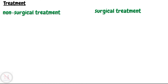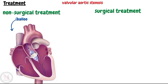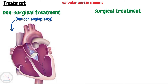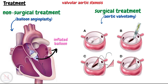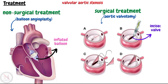There are both surgical and non-surgical treatment options available. In valvular aortic stenosis, the non-surgical treatment is balloon angioplasty performed in the cardiac catheterization lab. With the help of cardiac catheterization, a balloon is inflated at the site of stricture or narrowing, which opens up the aorta and improves blood flow. The surgical management involves aortic valvotomy, a procedure involving making an incision in the aortic valve to increase its opening, allowing blood to flow more freely and reducing symptoms.